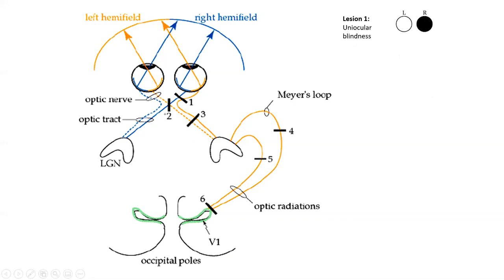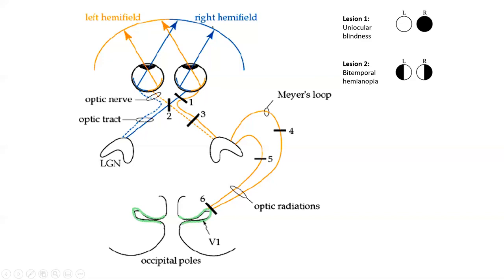We could also see a lesion at position two. These are fairly common because the pituitary gland sits very close to there. If you notice, when it's a lesion at the optic chiasm, it's only impacting those central nasal retinal fibers. In that instance, we would have bitemporal hemianopia. The reason it's bitemporal is because though the fibers are nasal, the nasal fibers of both sides project to the temporal field — and so that is where you would see the deficit.